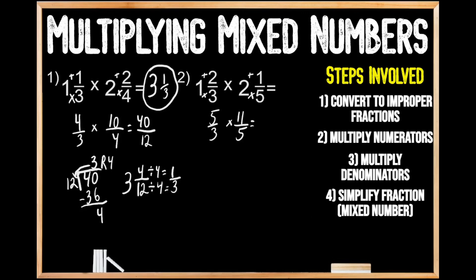Now moving on to step number 2, we're going to multiply our numerators. When we multiply 5 times 11, we get 55. Now step number 3, multiplying our denominators: when we multiply 3 times 5, we get 15, for 55 fifteenths.